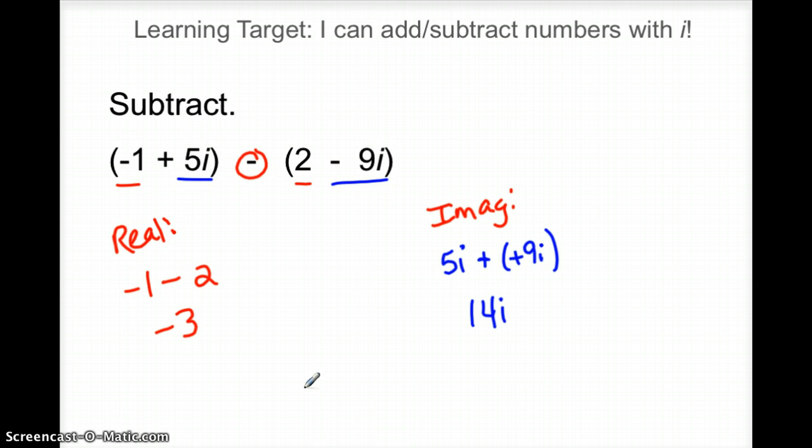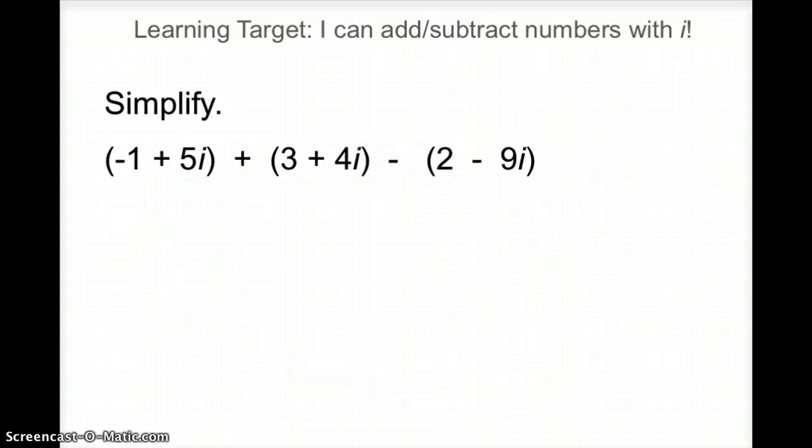All right, so one single complex number as an answer. The real part, negative 3, plus the imaginary part, 14i. And there would be my answer when I subtract. All right, so pretty simple enough, right? We can handle this. I think so.